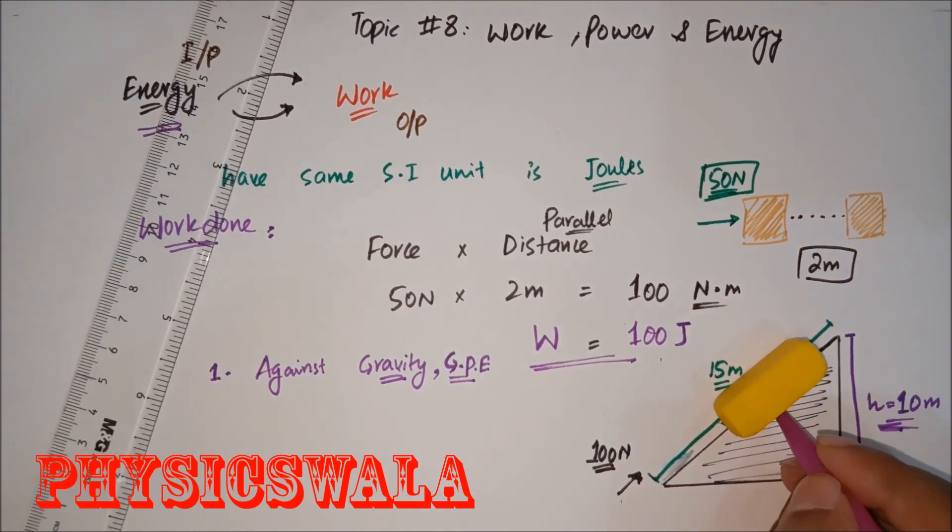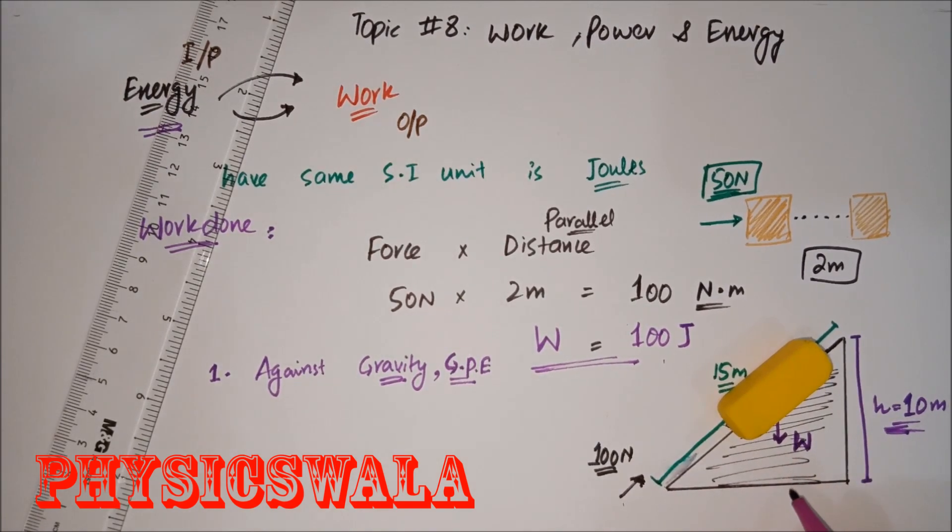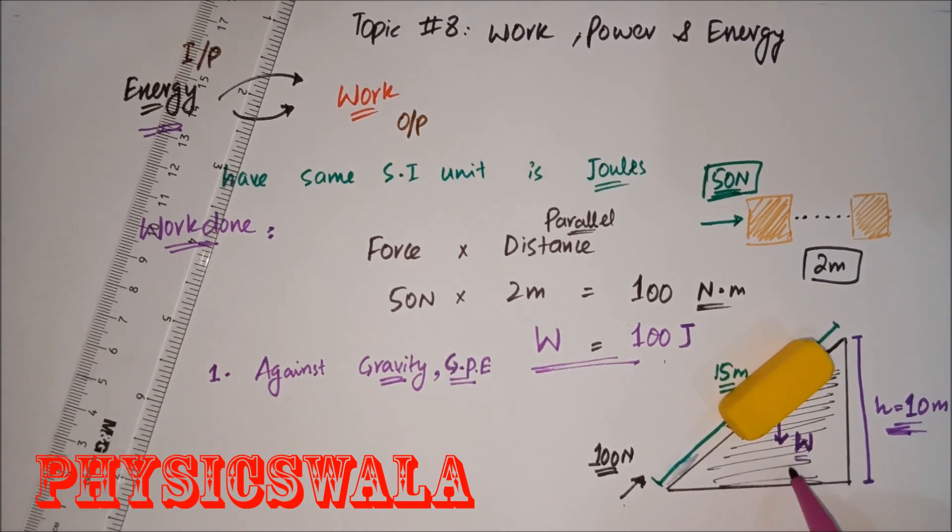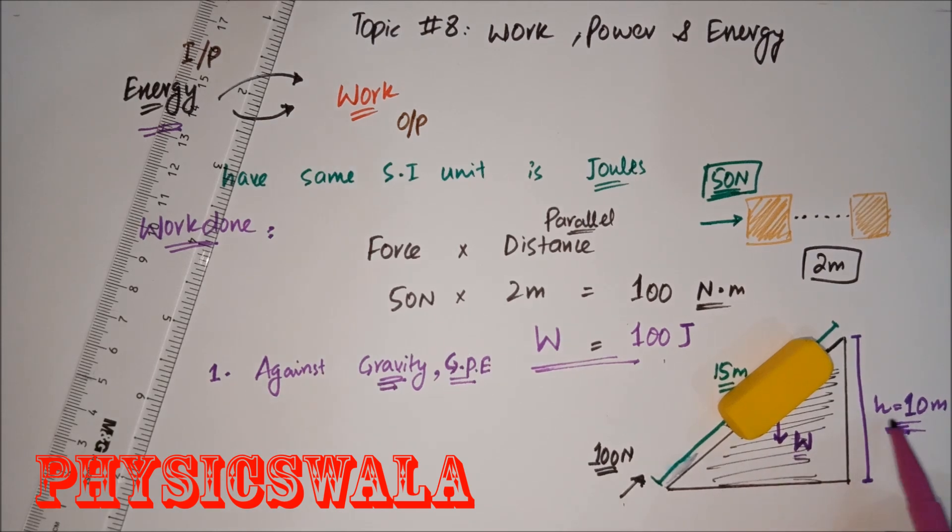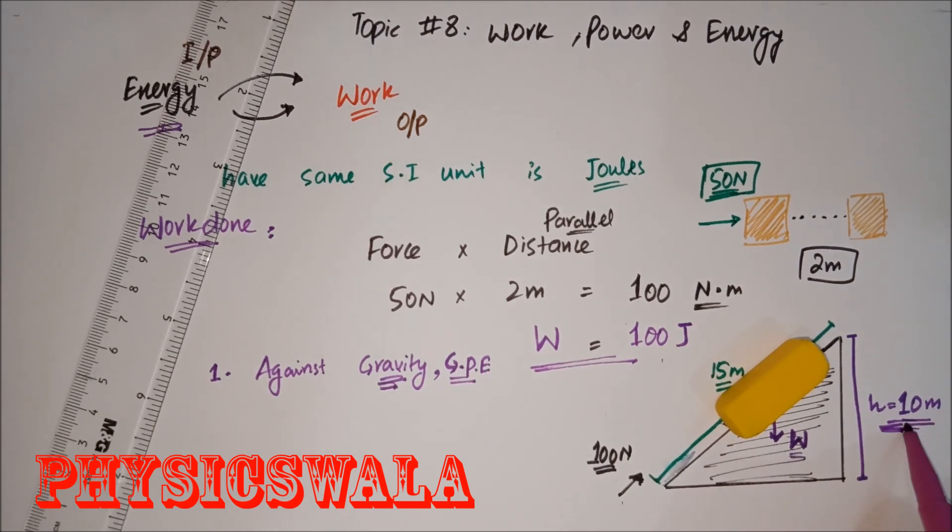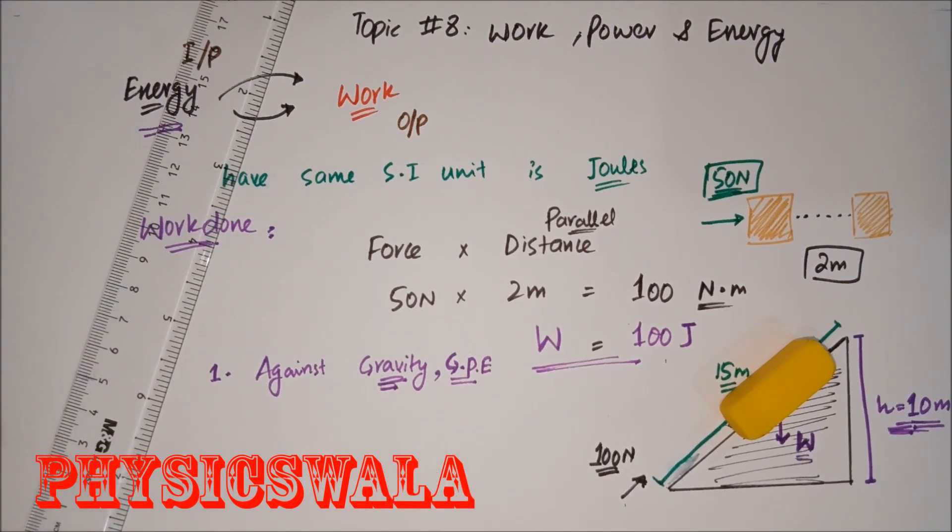Because if I have a box here, and I have weight drawn, the weight we always know acts downwards towards south. So this is the weight of the object, of this box. Now if you look at the weight which is due to gravity, in parallel the distance is this. So these words are very important.